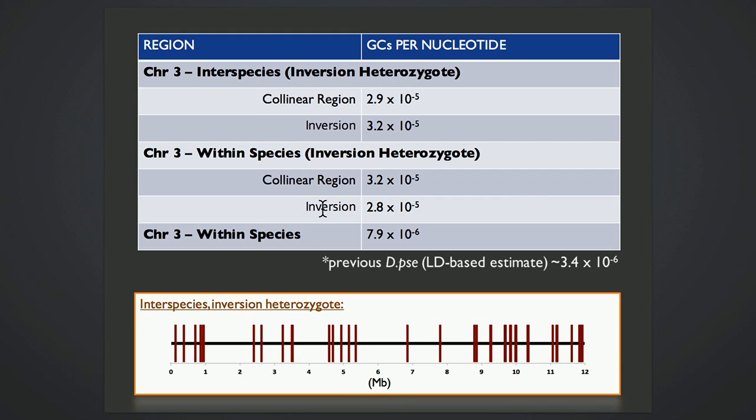And to again illustrate that we're really seeing gene conversions throughout these inverted regions, here's the interspecies cross, so this first set of data points, the inverted region from breakpoint to breakpoint, and this one is also about 12 megabases.